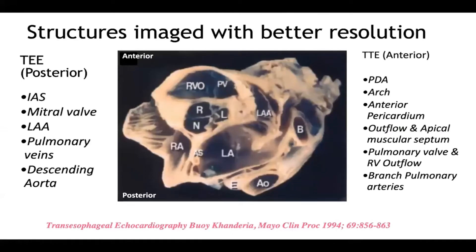Considering the differences between trans esophageal echo and trans thoracic echo in the cath lab, there is a difference in the structures imaged with better resolution by each modality. This is the cross section of the heart at the level of the aortic valve, and the esophagus is marked in the posterior aspect. With trans esophageal echo, the probe is placed in the esophagus and the heart is imaged from the posterior aspect. Since the probe is closer to the posterior structures — the left atrium, left atrial appendage, pulmonary veins, and inter-atrial septum — trans esophageal echo gives superior resolution of these posterior structures.